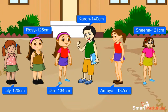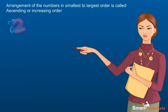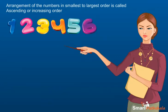By comparing, we can say that Lily is shortest of all. Arrangement of the numbers in smallest to largest order is called ascending or increasing order.